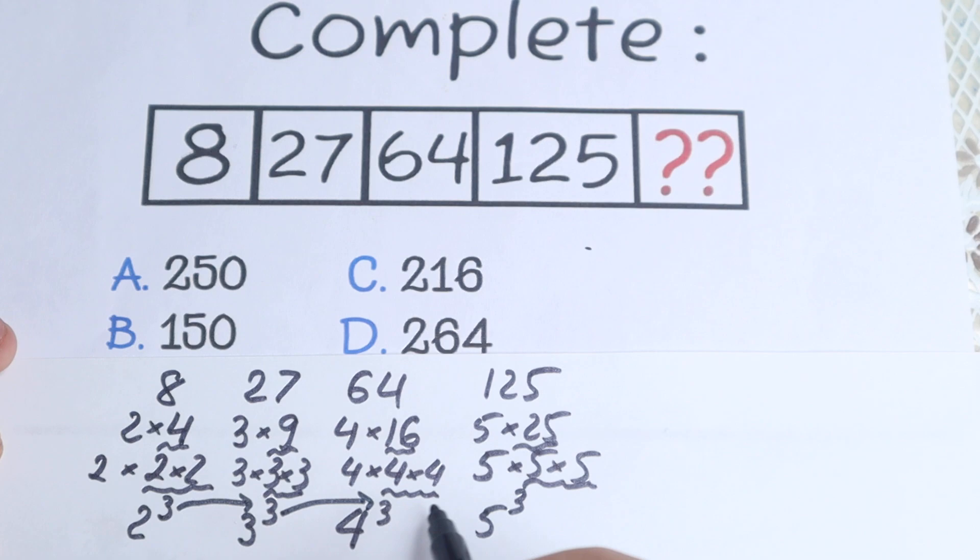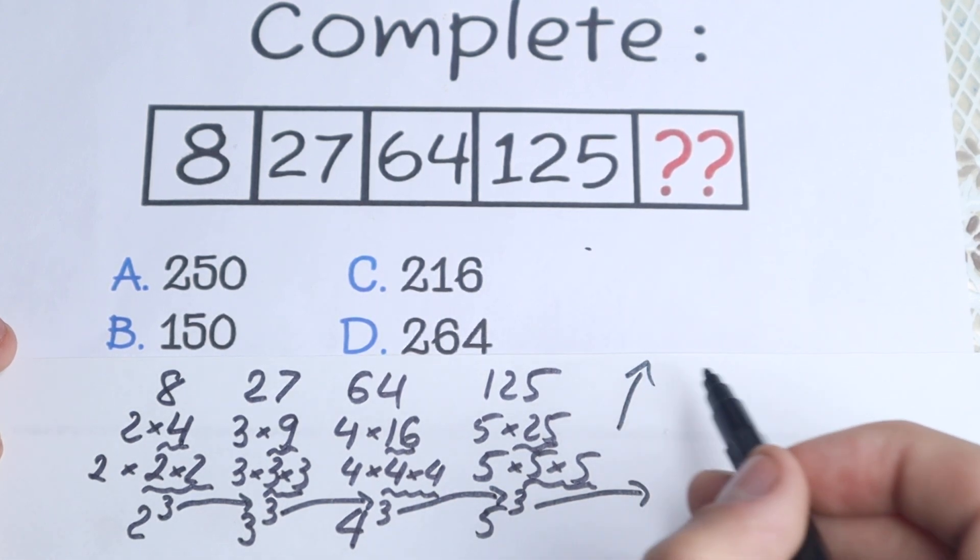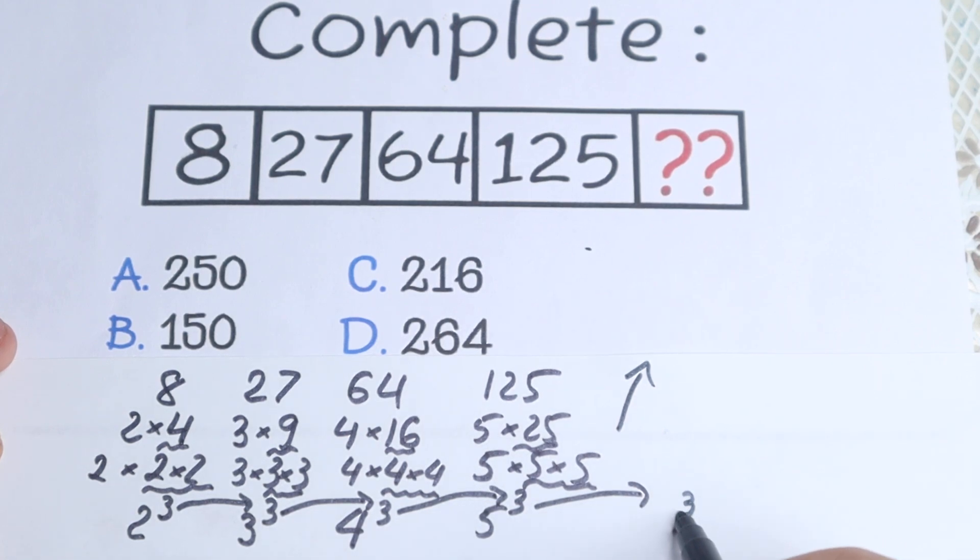We have 3, we have 3, we have 3, and our last power, so for this last number, it will be 3. What about the number? We have 2, 3, 4, 5, so it looks like 6 right here.